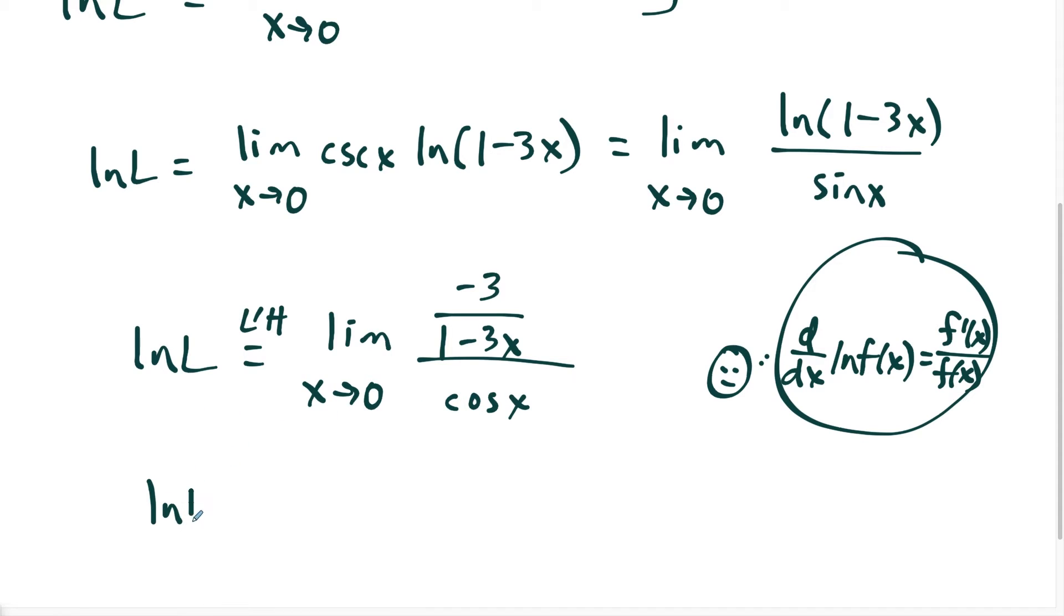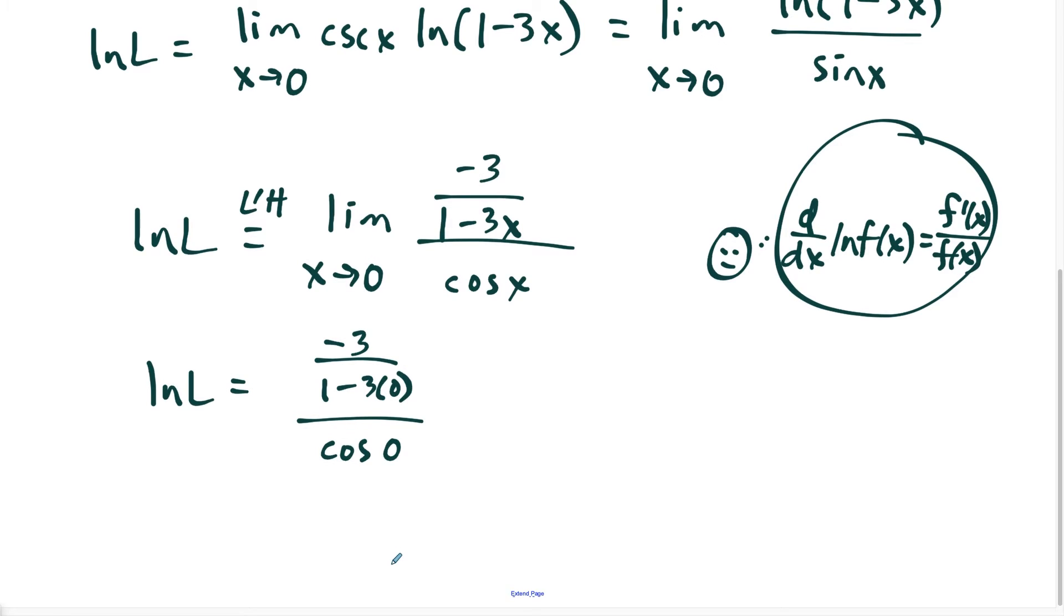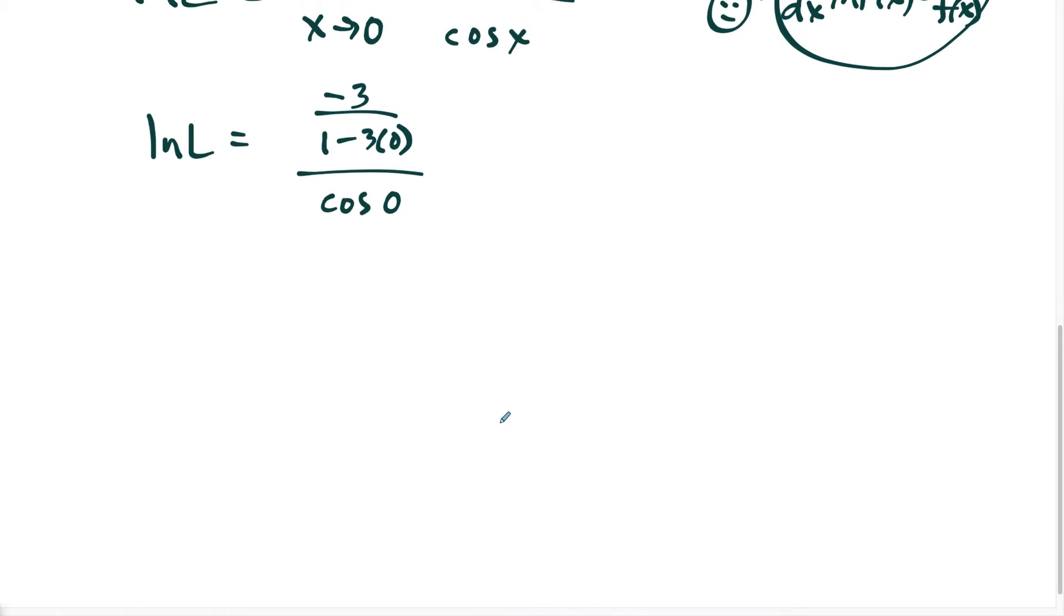So from here, now we could evaluate this limit just by plugging in, we have natural log of L equals, we have negative three over one minus three times zero, divided by cosine of zero. And if we work this out, we'll just give ourselves more space. We're going to have natural log of L equals, well, notice this equals negative three divided by one divided by one. So this just equals negative three.